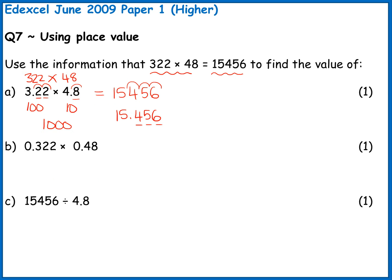Similar sort of process for part B. I'm doing a comparison between my original calculation and what I've got here. So this is 1, 2, 3, that's going to be a thousand times smaller. This is two decimal places so a hundred times smaller. So overall I've got a thousand times a hundred. This is actually going to be a hundred thousand times smaller.